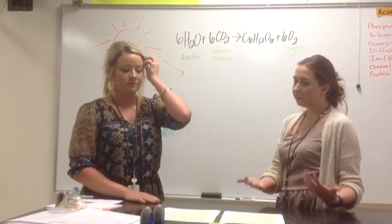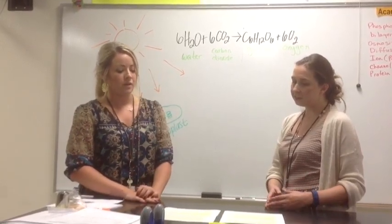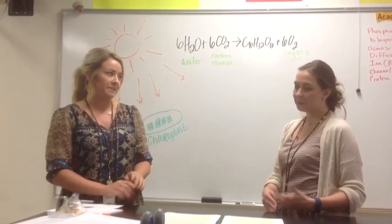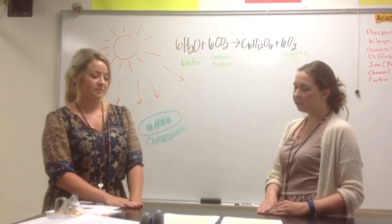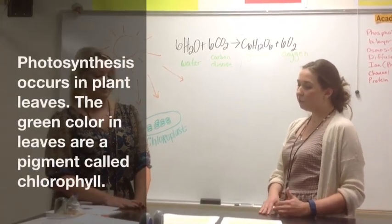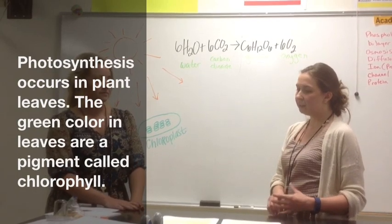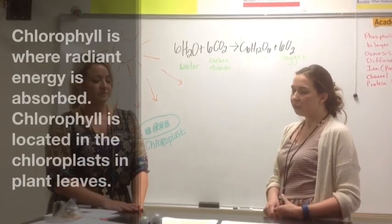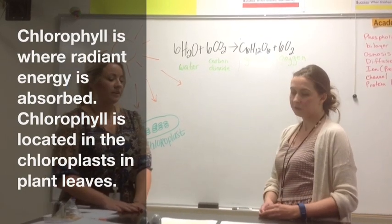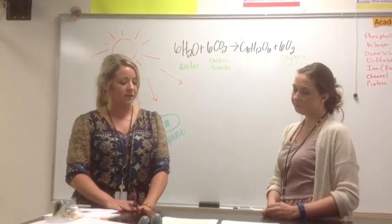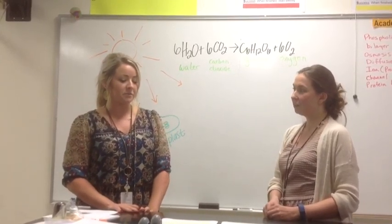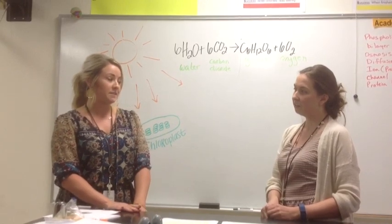Photosynthesis occurs in the chloroplast, which means it's only in plant cells because plants have chloroplasts. Photosynthesis occurs in the chloroplasts of plant leaves because they are green. The green color, called chlorophyll, is a pigment needed to absorb radiant energy. Chlorophyll is located in the plant organelle called the chloroplast. So chloroplasts contain chlorophyll, which makes the plant green, and the chlorophyll absorbs the radiant energy needed for photosynthesis to occur.